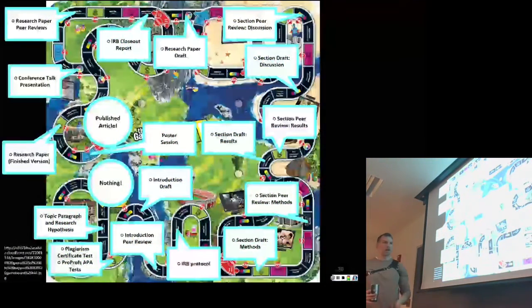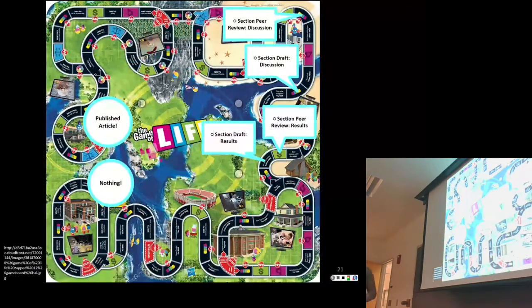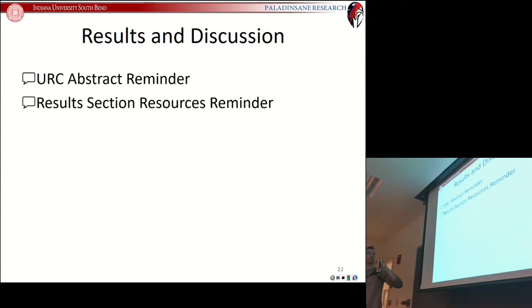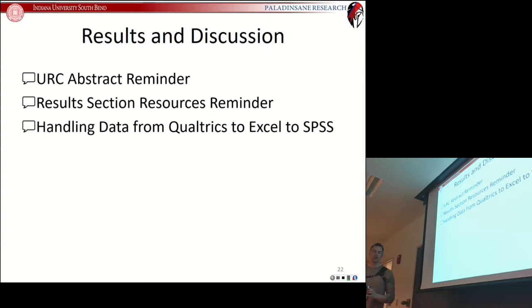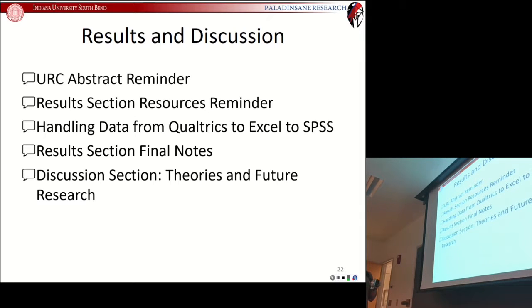Focusing on where we're trying to end up — with a published article and a conference talk presentation — today we're going to wrap up our look at the results section and the discussion section. We'll have a URC abstract reminder, a results section resources reminder, suggestions on how to handle your data from Qualtrics into Excel, final notes on the results section, and then we'll talk about the discussion section and how to deal with theories and future research.